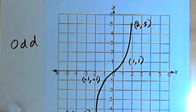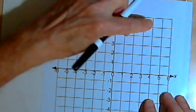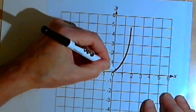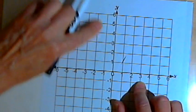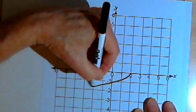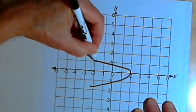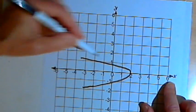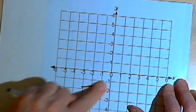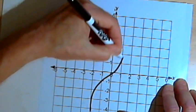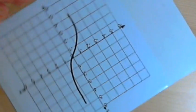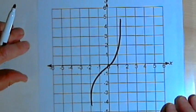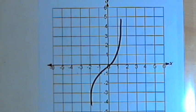Just to review one more time quickly: if you have a graph that you can fold on the y-axis and both sides match, then that's symmetrical with respect to the y-axis. If you can fold it along the x-axis and both sides match, then that's symmetrical with respect to the x-axis. If you can take the graph and twist it 180 degrees about the origin and it looks the same as what you began with, then that's symmetrical with respect to the origin. And that's about it — take care, I'll see you next time.